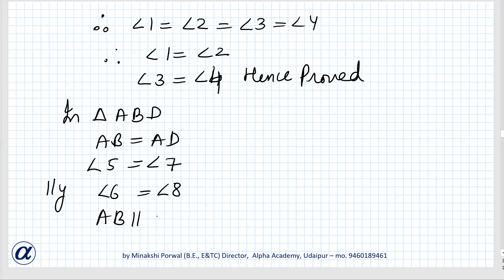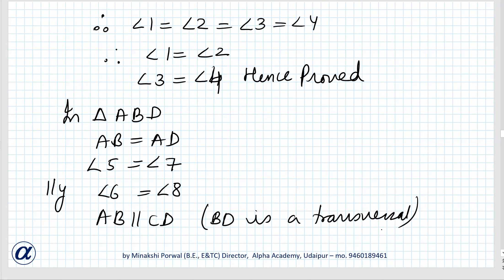AB is parallel to CD and BD is a transversal. Therefore angle 5 equals angle 8 — alternate interior angles.